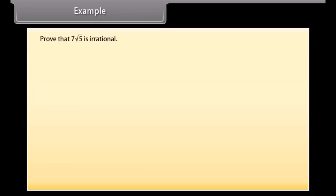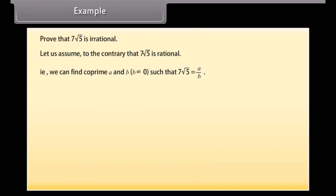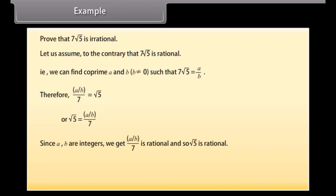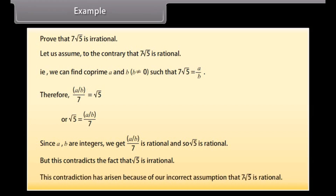Example: Prove that 7√5 is irrational. Assume to the contrary that 7√5 is rational — that is, we can find co-prime a and b, where b ≠ 0, such that 7√5 = a/b. Therefore a/(7b) = √5, meaning √5 = a/(7b). Since a and b are integers, a/(7b) is rational, and so √5 would be rational. But this contradicts the fact that √5 is irrational. This contradiction arose because of our incorrect assumption that 7√5 is rational.